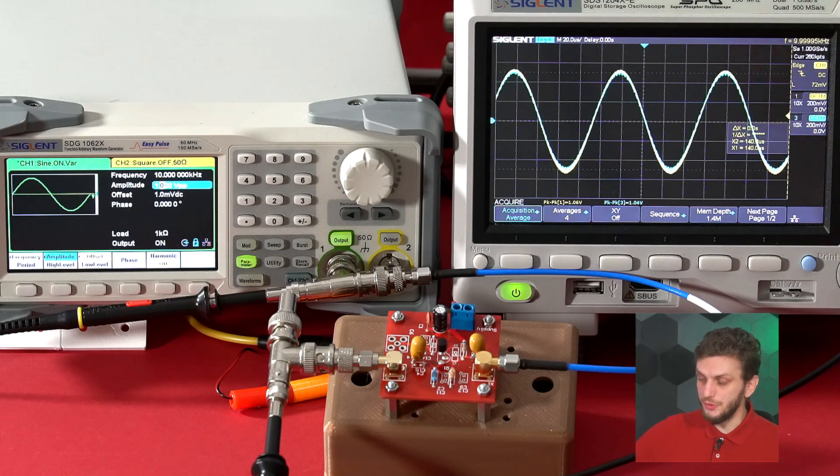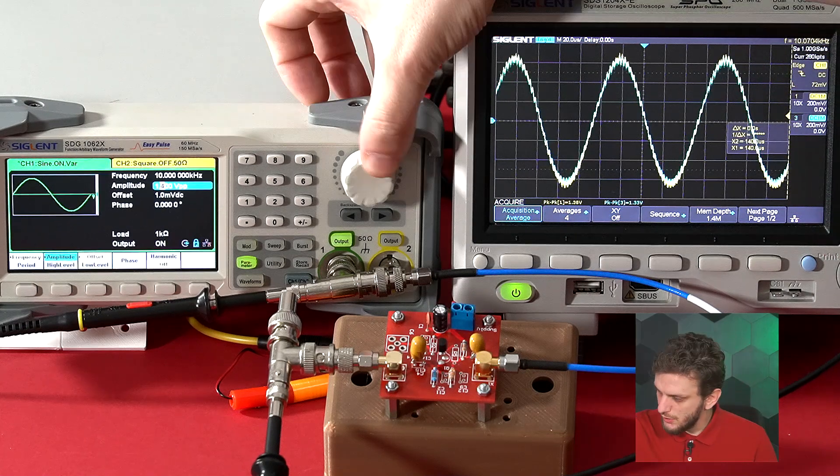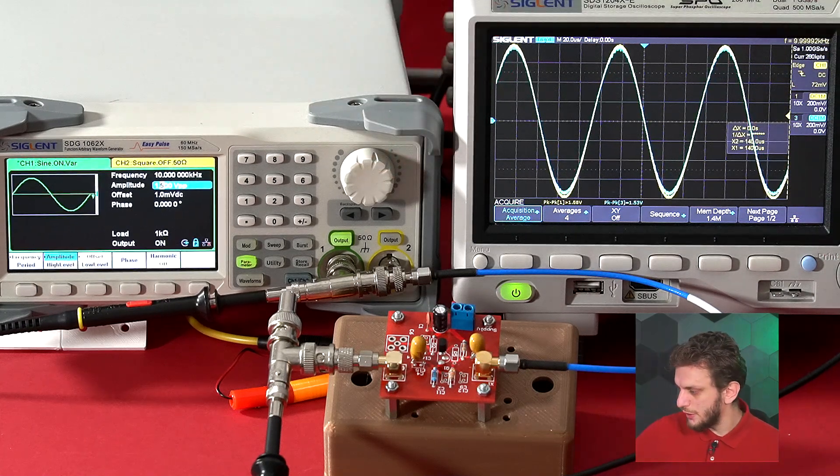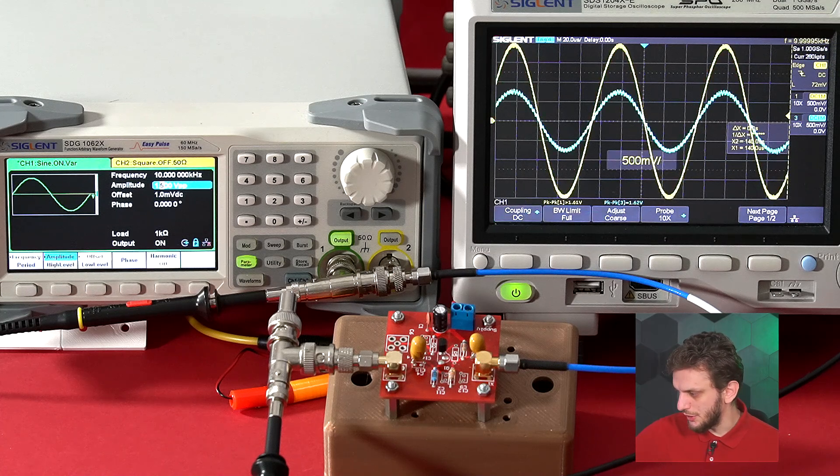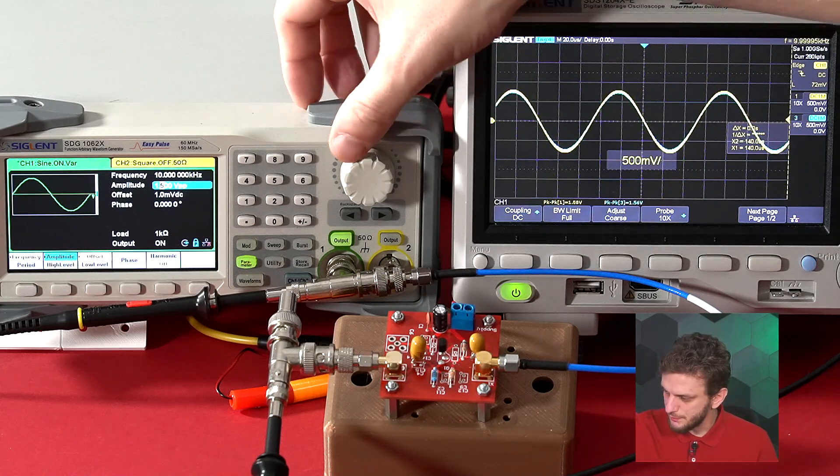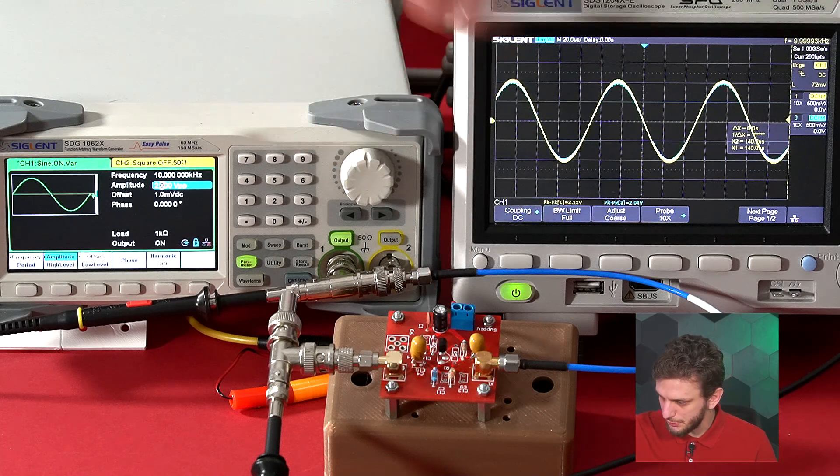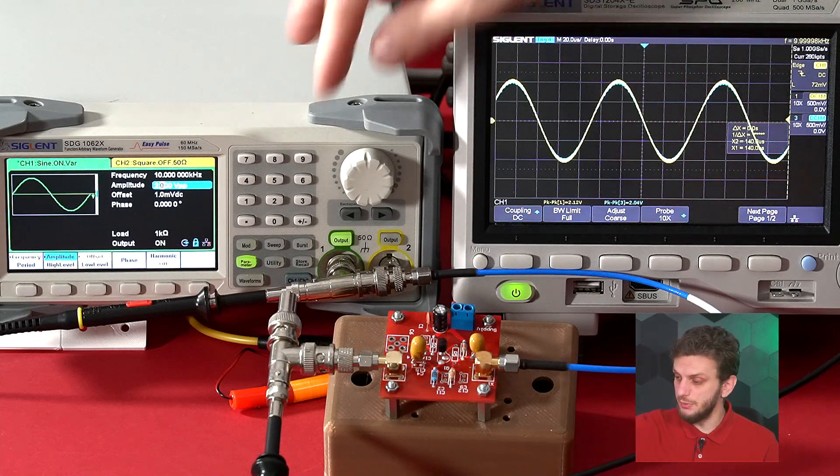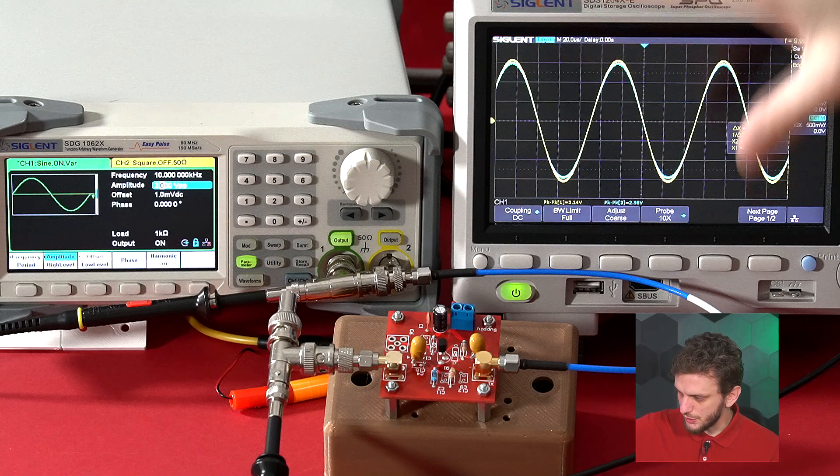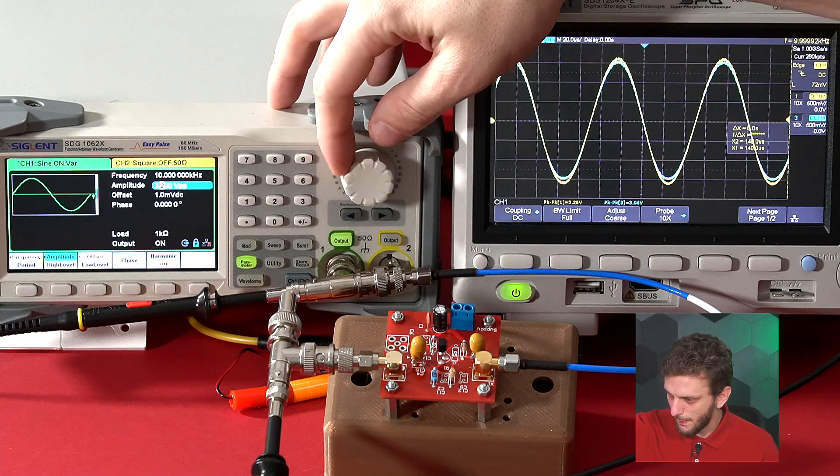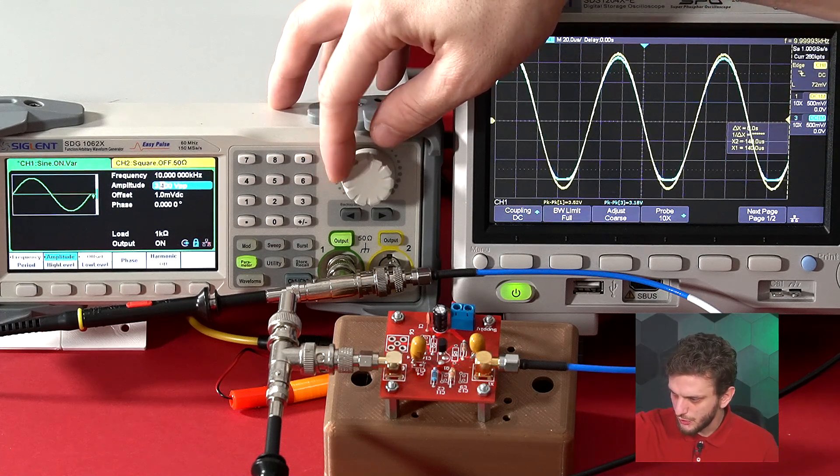Next, we can try to increase the signal amplitude. If we slowly go higher, maybe change the voltage ratio a bit, so we're up to 2 volts peak-to-peak, still the same signal is appearing. 3 volts, no distortion.